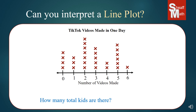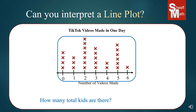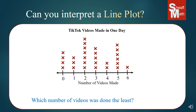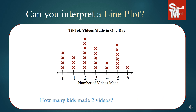How many total kids are there? You would add up all of the X's — and that gives us twenty-eight kids in all. You might get a question like: which number of videos was done the least? Six videos was done the least on this line plot. And how many kids made two videos? Be careful counting because your eyes can play tricks on you — there were seven kids in the two-video column.